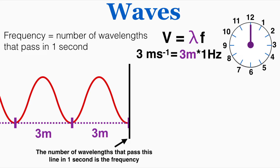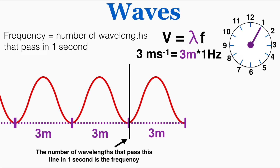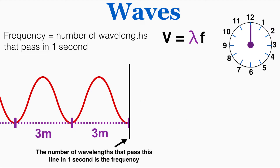With a frequency of one Hertz, one wavelength passes by in one second. We can see that the frequency was one Hertz and the wavelength was three meters, which implies the velocity was three meters per second — it traveled exactly three meters from where it started in that one second of travel. We can now imagine the frequency is two: two wavelengths will pass by, each three meters long, so the velocity will be six meters per second.